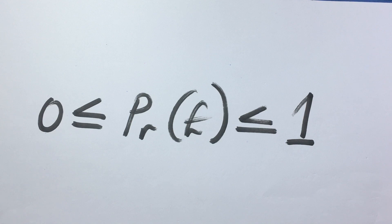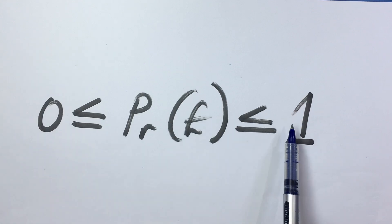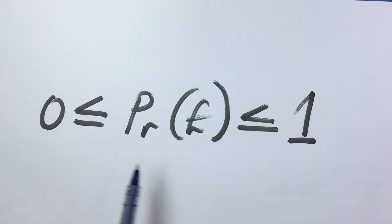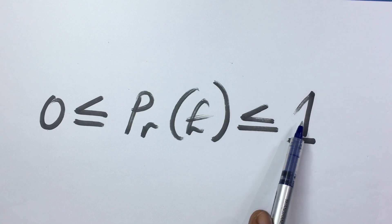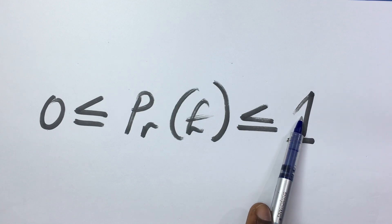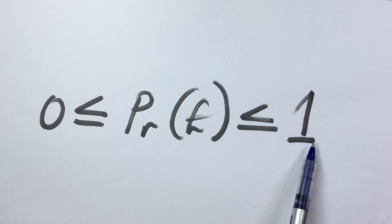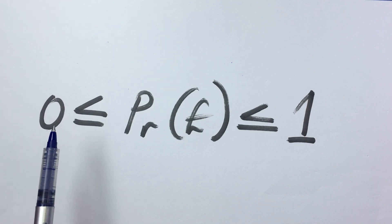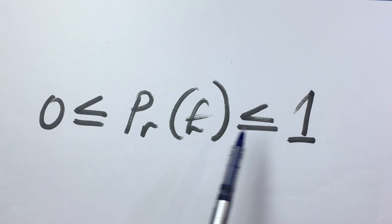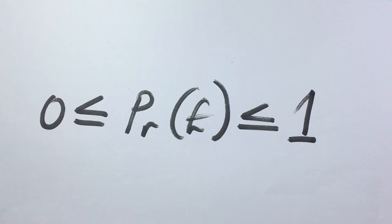In this video, we want to show you that the probability of any event from a random experiment must lie between zero and one. By this inequality, the probability of an event can be one or zero, but can never be greater than one, neither can it be less than zero — it can lie between zero and one, with zero and one being possibilities.